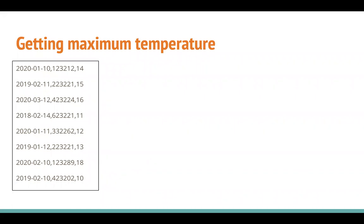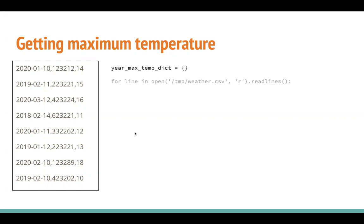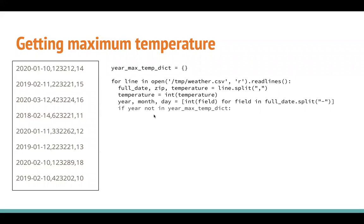Let's talk about how to address this in Python. We start with a dictionary which is empty. This dictionary will contain the key as the year and value as the maximum temperature of the year seen so far. We iterate through this file one by one, keeping track of the maximum temperature seen so far for each year. We read the file, iterate through the content, and parse the values of temperature and year. If the year is not present in the dictionary, which means it's seen for the first time, we consider that temperature to be the maximum temperature so far.